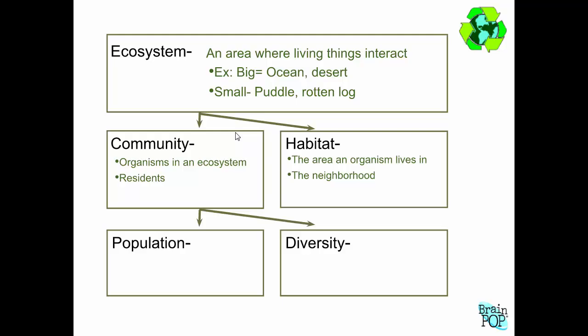When we further break things down, we can talk about individual populations. A population is all of one specific species in an area — it has to be one species only. For example, if I'm thinking about a pond ecosystem, all of the bullfrogs living in that pond would be one population. All of the Asian carp living in that pond would be another population. If I said all the fish in the pond, that would not be a population — why not? Because there are lots of different species.